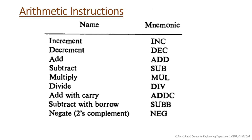The ALU can perform arithmetic, logic, or shift operations. Arithmetic instructions include increment, decrement, add, subtract, multiply, divide, add with carry, subtract with borrow, negate, and two's complement. When used, these instructions change the data by performing computational operations.